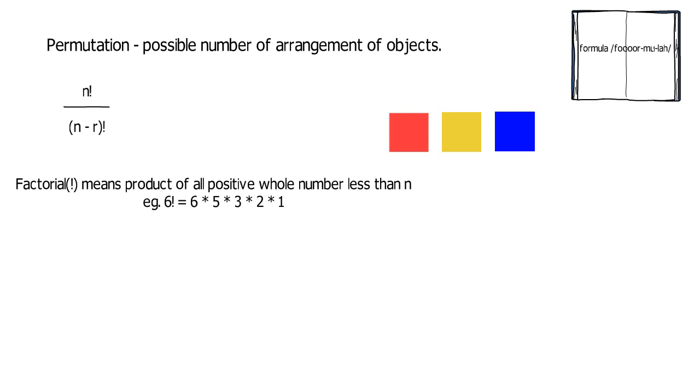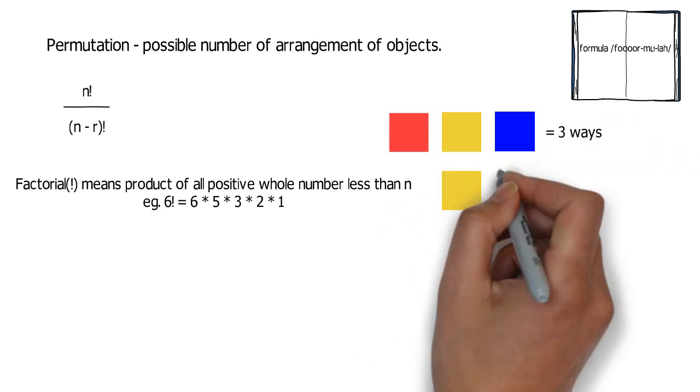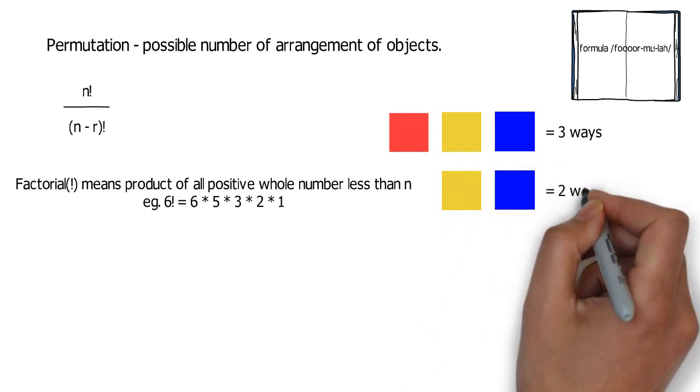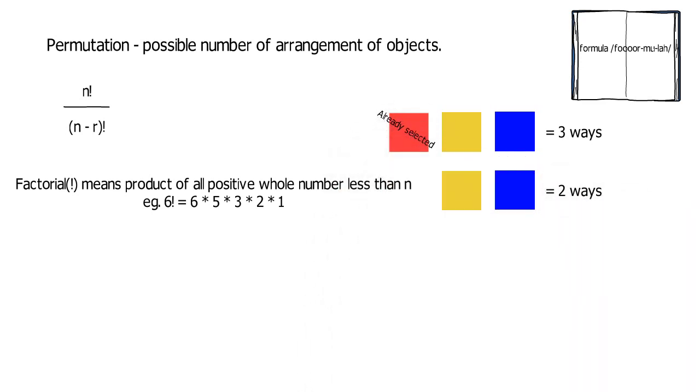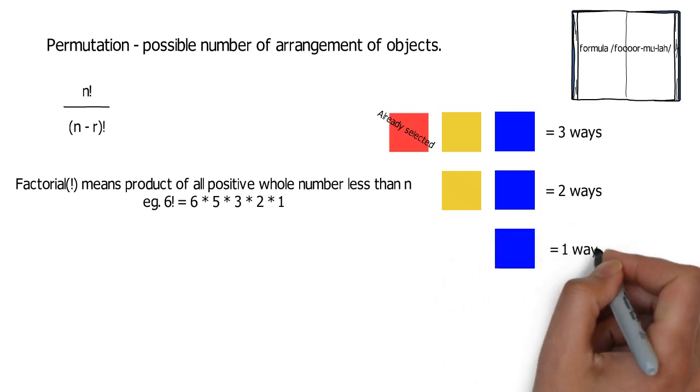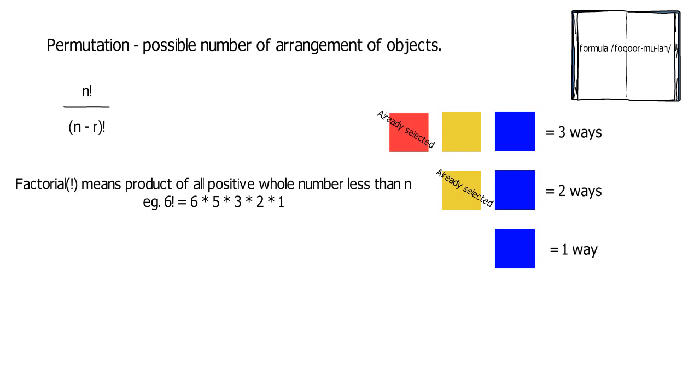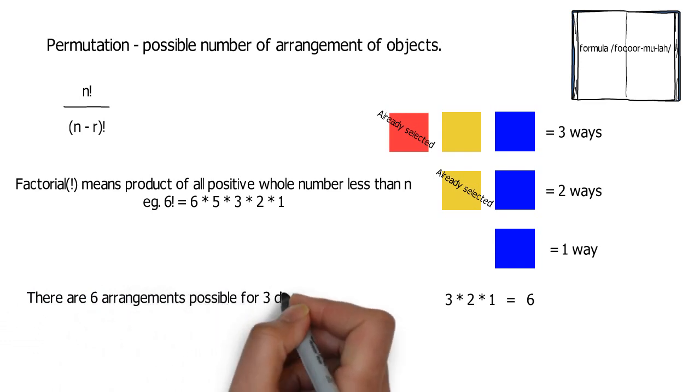Suppose we have 3 blocks. Then, we have the choice to pick either one of the 3. Meaning, we have 3 ways of choosing. And, if we're gonna select again, we only have now 2 ways available. Because, 1 is already selected. Another selection and we have now 1 choice left. By multiplying those ways, we can acquire the possible number of arrangements. 3 times 2 times 1 is equal to 6. Therefore, we have 6 ways of arranging those objects.